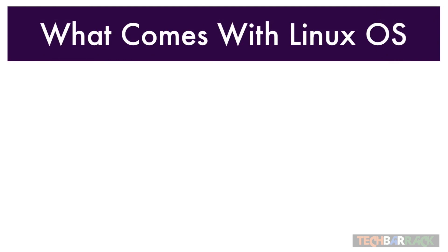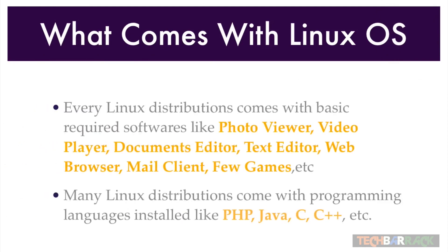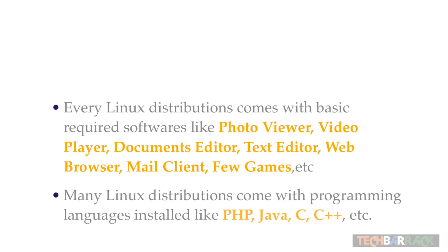What comes with the Linux OS? Every Linux distribution comes with basic required software like a photo viewer, video player, document editor, text editor, web browser, mail client, a few games, and many other applications required for daily usage. Many Linux distributions also come with programming languages pre-installed, which may include PHP, Java, C, C++, etc.